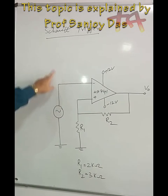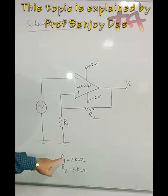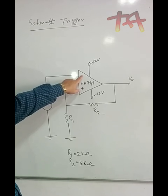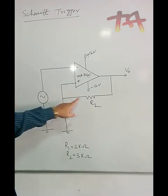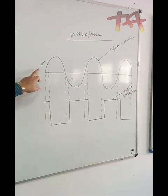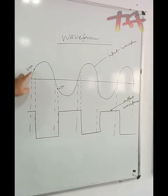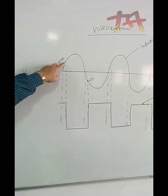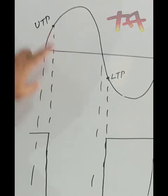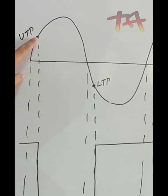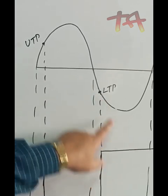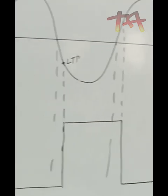We are going to do a Schmitt Trigger, and this is the circuit diagram. The input side has sinusoidal waveforms, and this is an inverting terminal from the sinusoidal. These are the input waveforms and this is the output waveform. As I told you in theory class, the UTP value is +4 and the LTP is -4. As the input crosses +4, the output changes to low; as it crosses -4, the output changes to high.